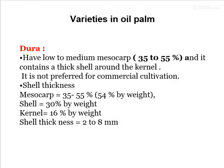There are three main varieties of oil palm. The first is Dura, which has a low to medium mesocarp of 35 to 55% and contains a thick shell around the kernels. It is not preferred for commercial cultivation. Shell thickness accounts for 30% by weight, kernel 60% by weight, and shell thickness is 2 to 8 mm.